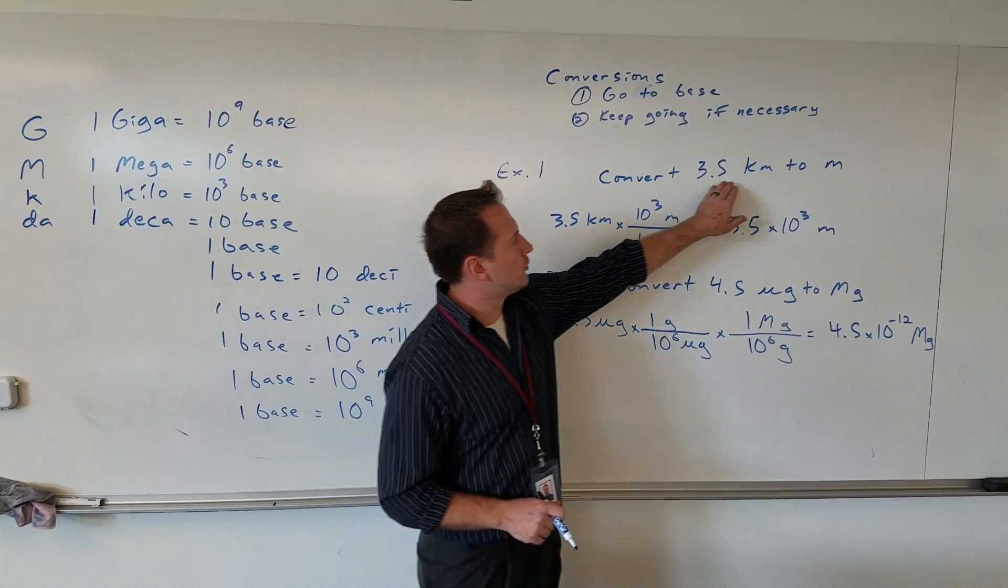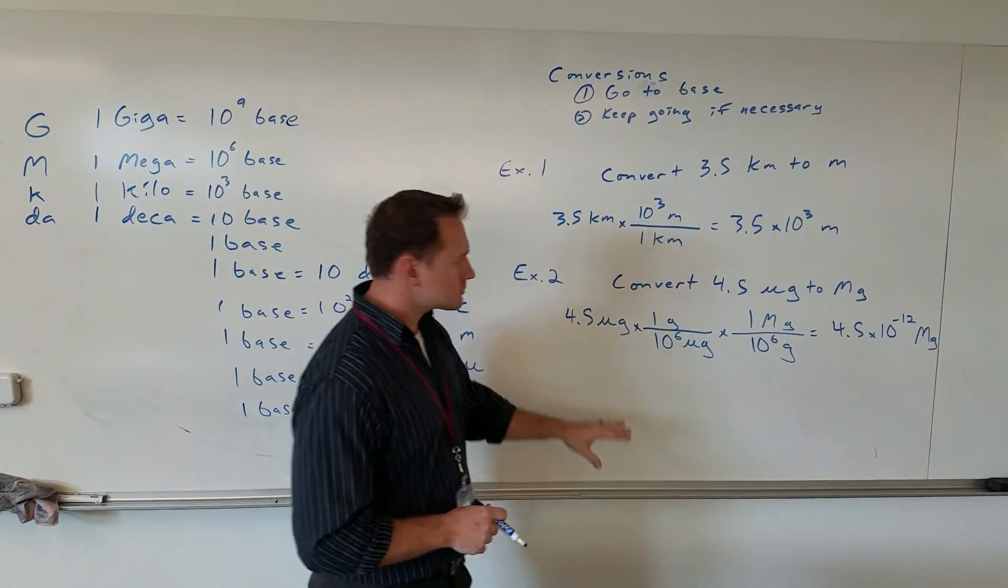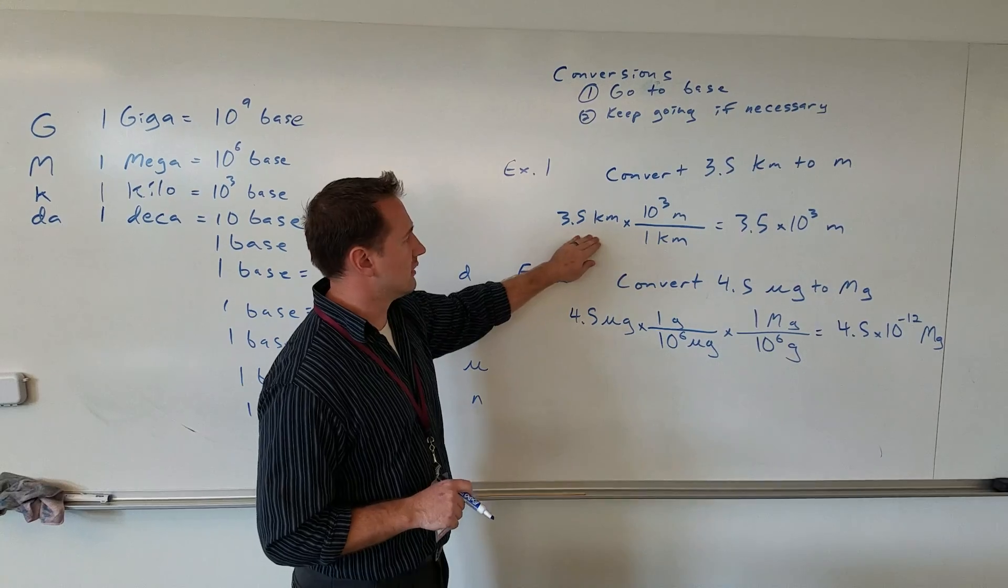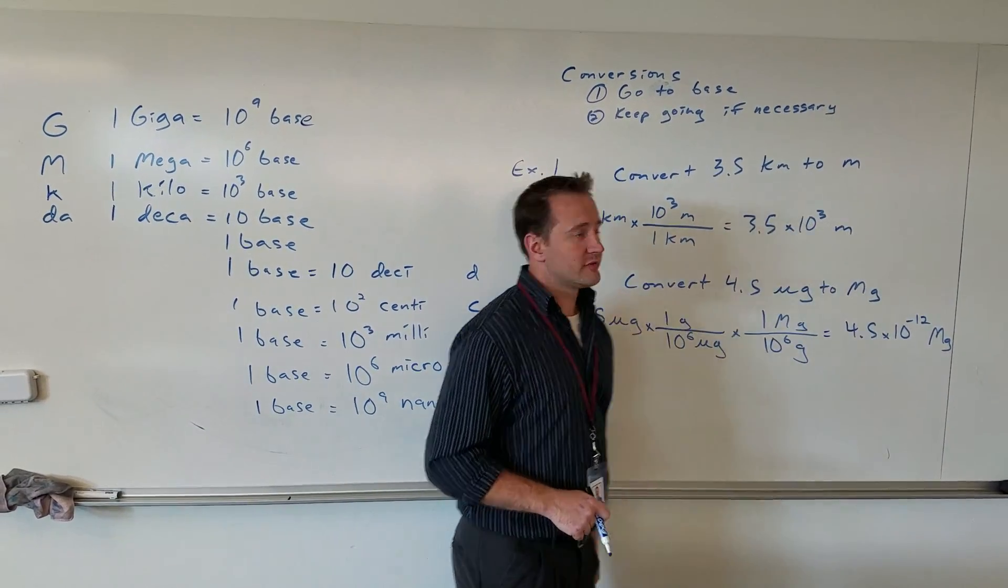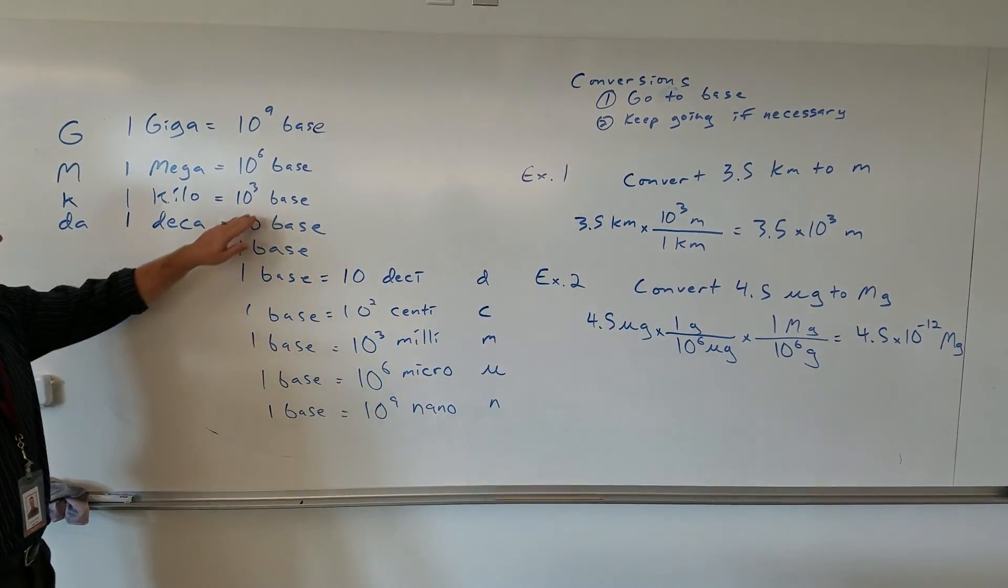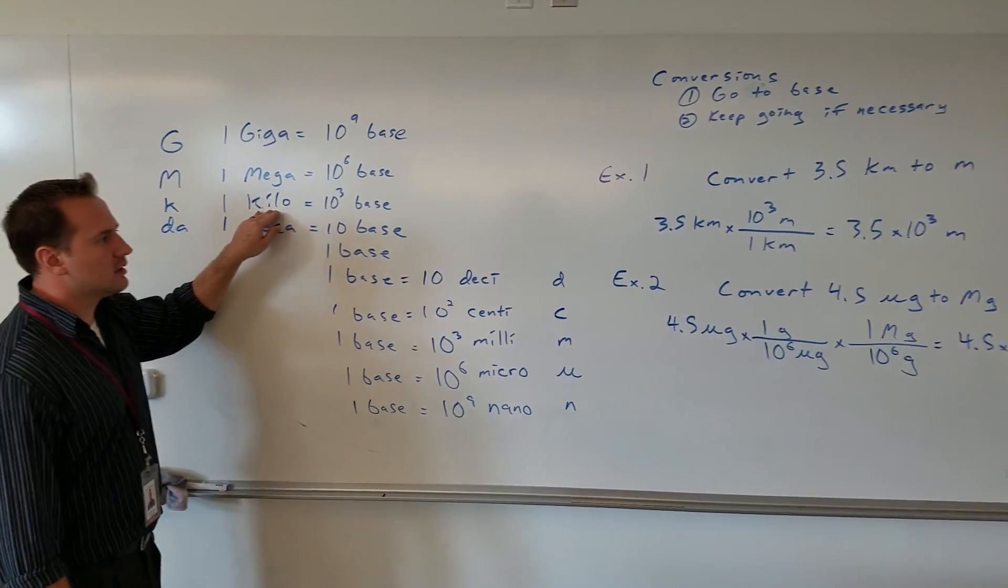First example: convert 3.5 kilometers to meters. In any of these problems, you write down what you're given and then see what you can relate it to. You can directly relate kilometers and meters. There are 1,000 meters in a kilometer.